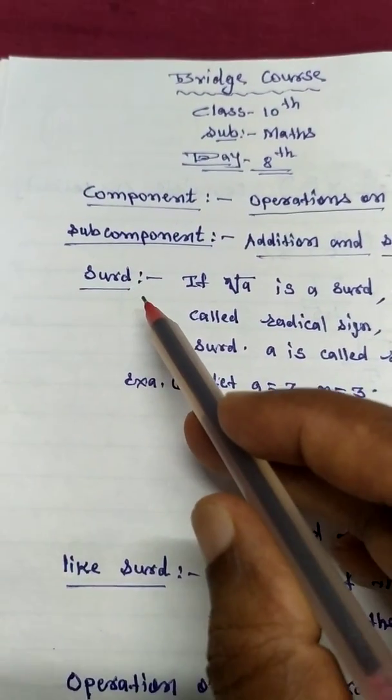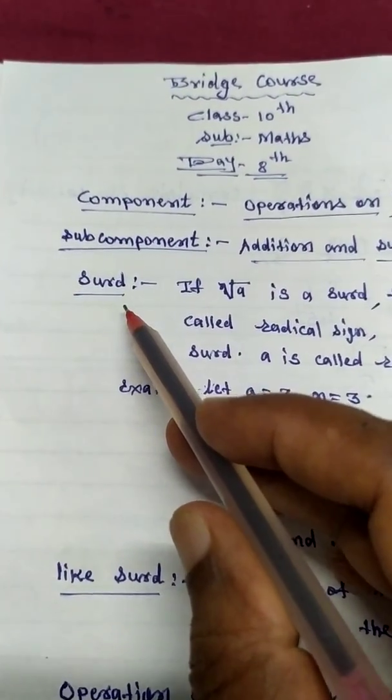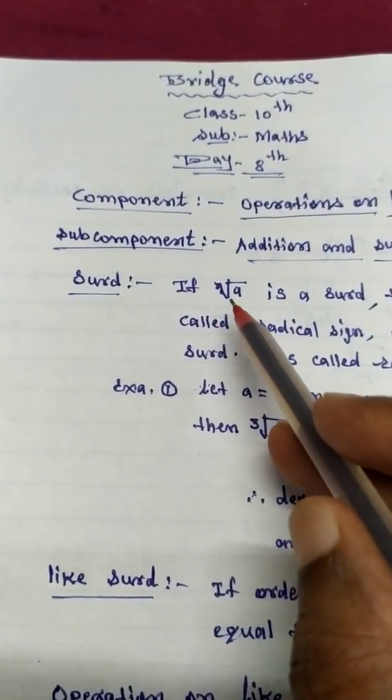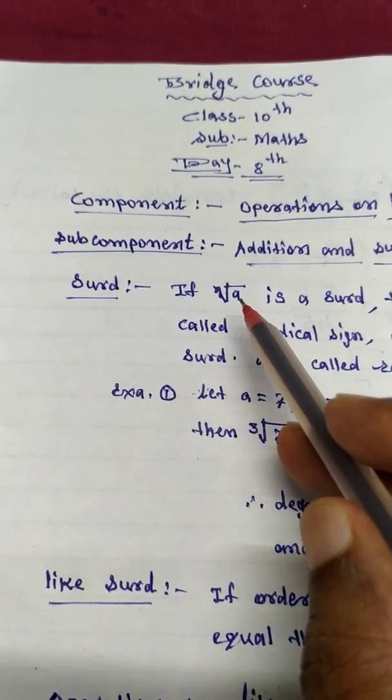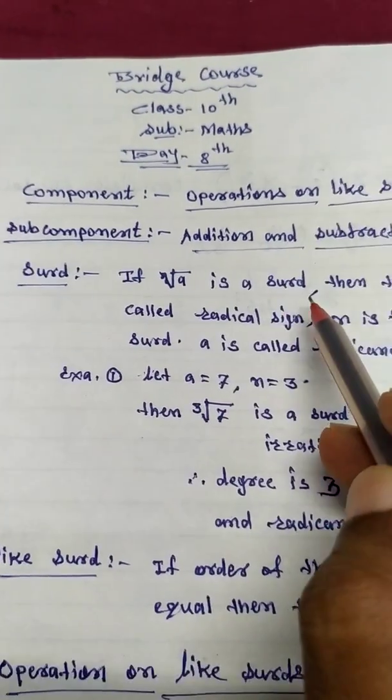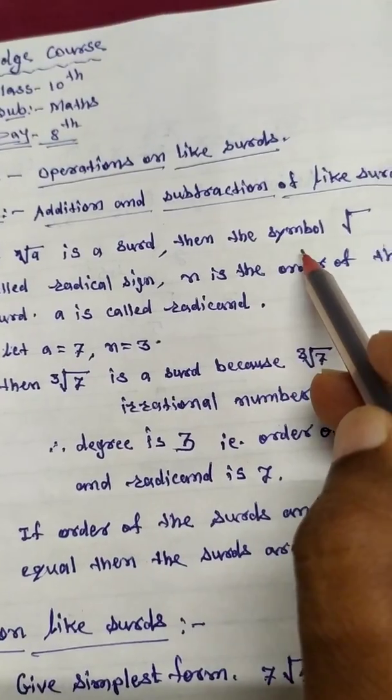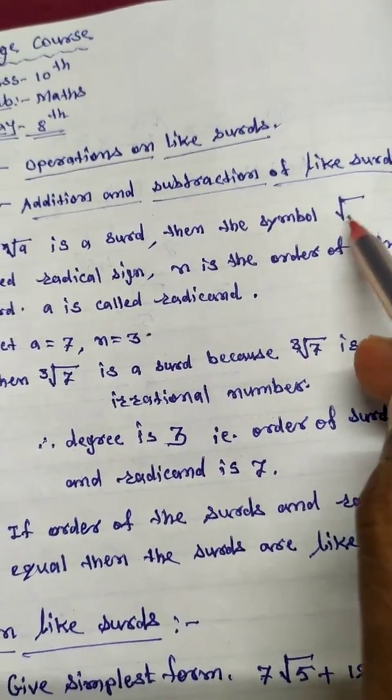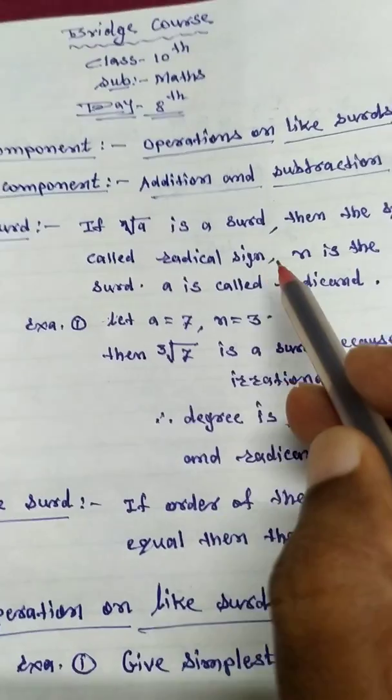Now first we see surd. If N root A, this is a surd. Then the symbol, this symbol is called radical sign.